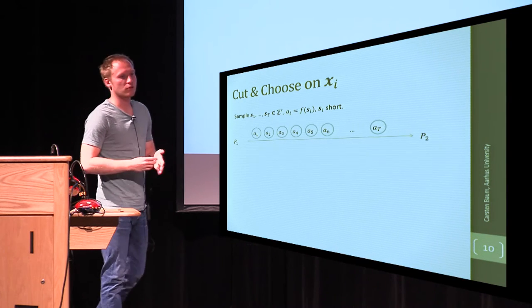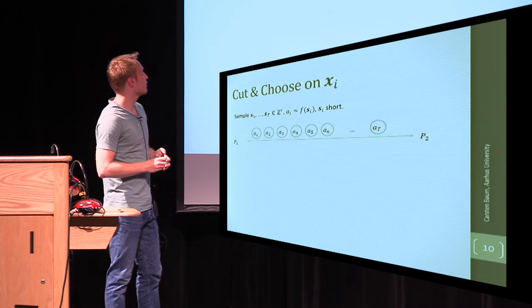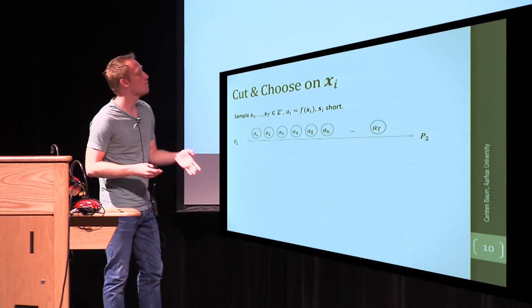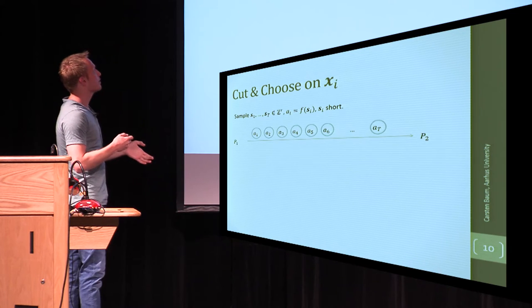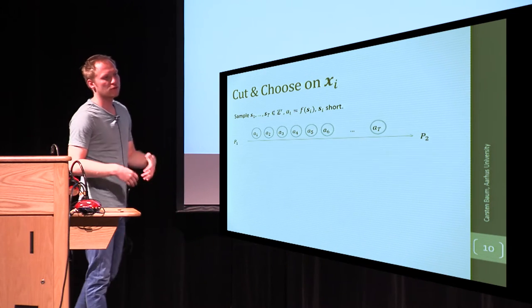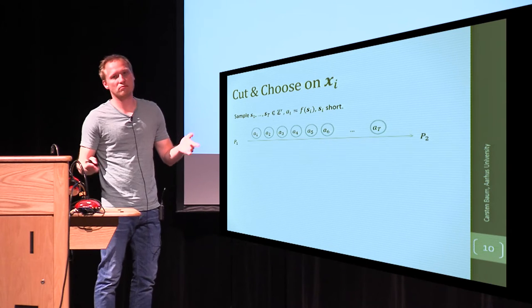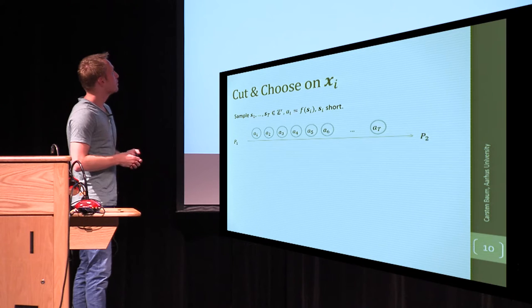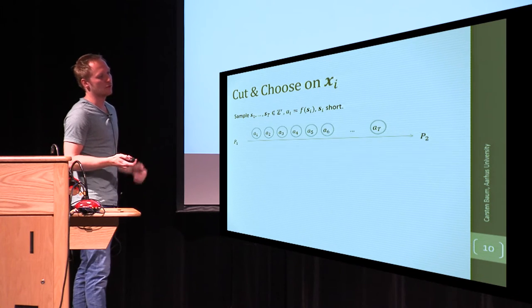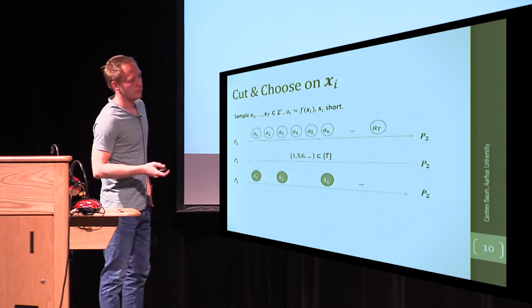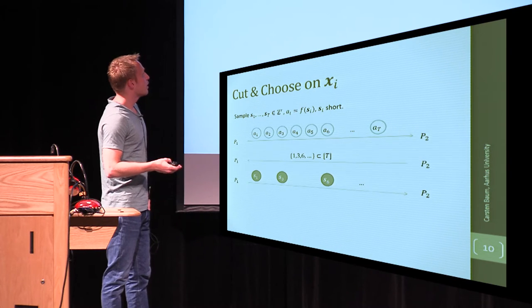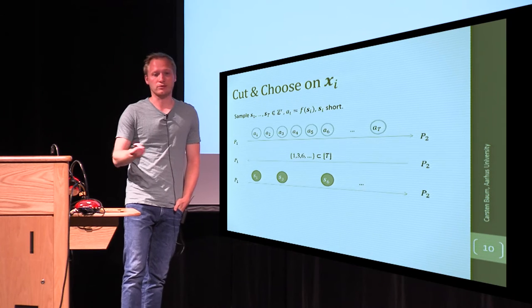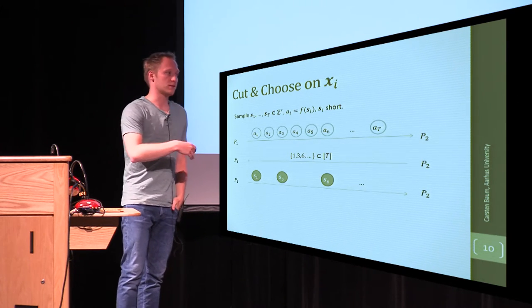So, how do we get down to constant overhead? In the first step of a protocol, let's say we have N values of which we want to prove knowledge of. So, let's say we have Xi from X1 to Xn, and what we do in the first step is we sample T auxiliary values for a T which is supposed to be defined later. So, what we do is, first of all, a traditional cut-and-choose, where the prover chooses a lot of auxiliary values, applies the function f, sends them over to the verifier, the verifier chooses a subset, and the prover opens that subset to him.